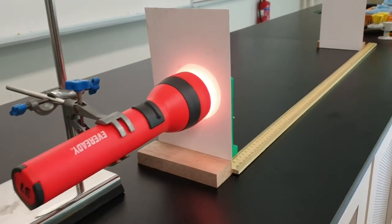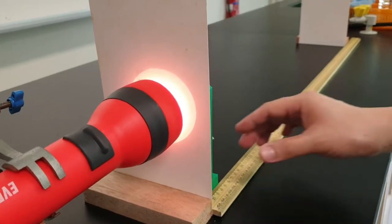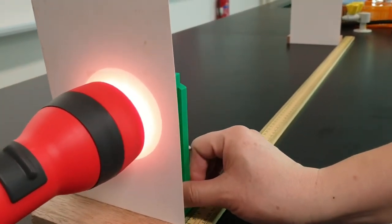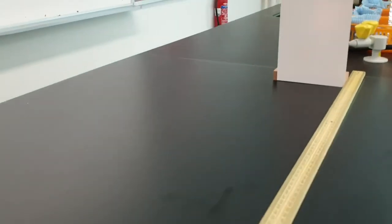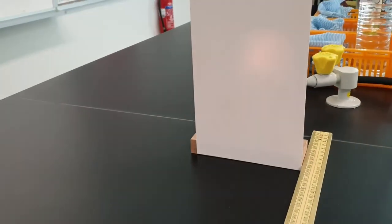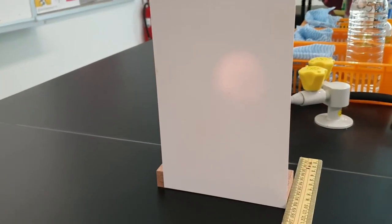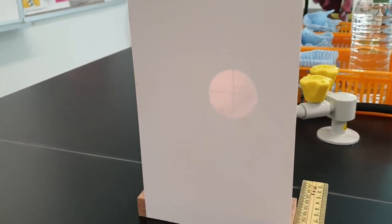One source of error for an experiment like this with a lens will be identifying the sharpest image. That itself is a source of error because it's very difficult to see exactly. You move one millimeter forward or one millimeter backwards, the object seems to be sharp, you can't tell the difference.